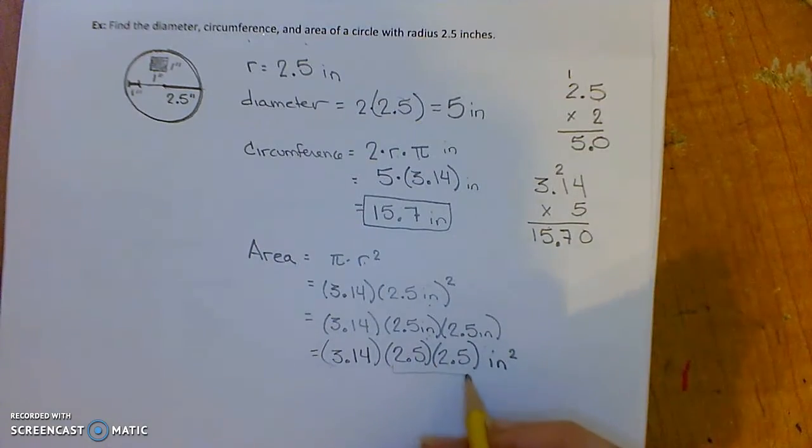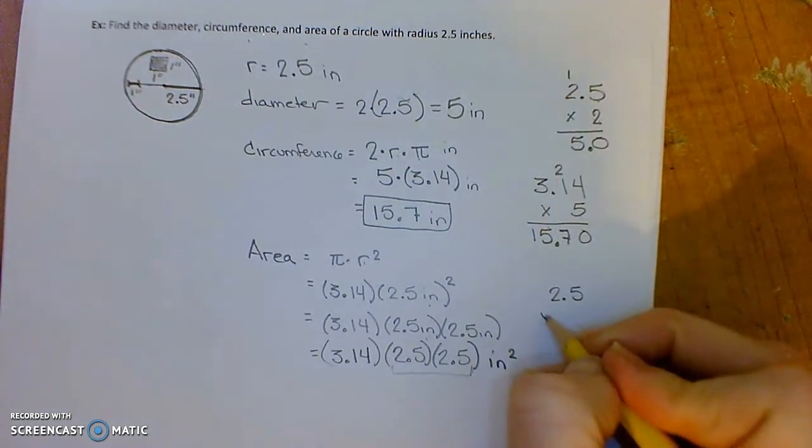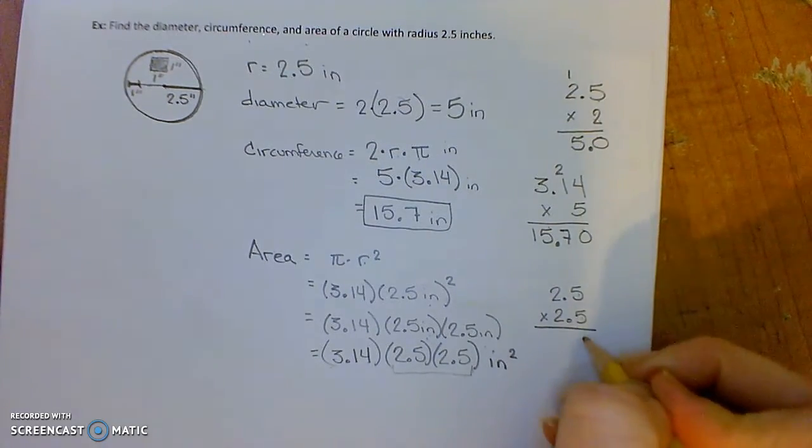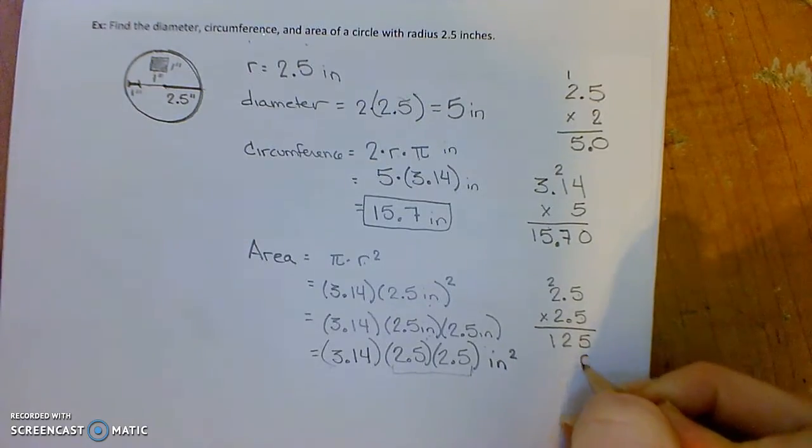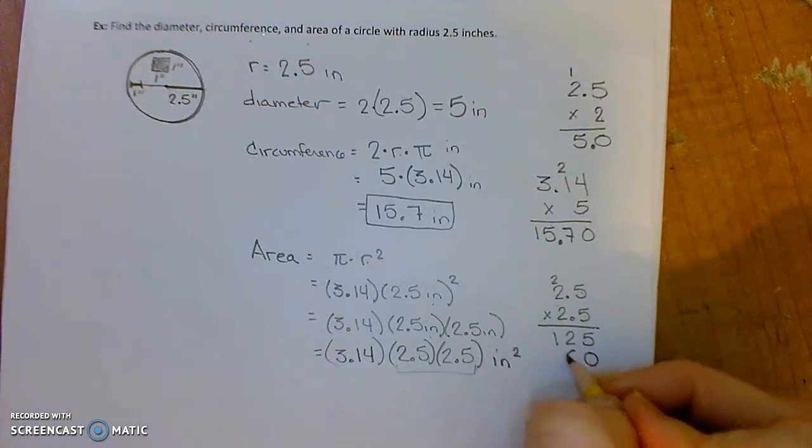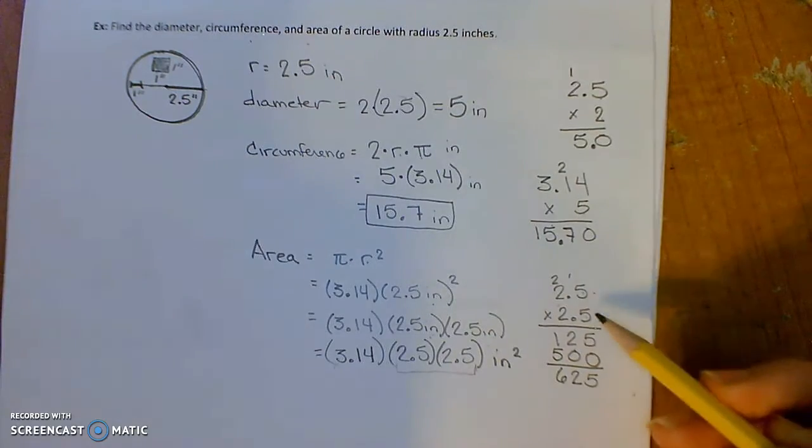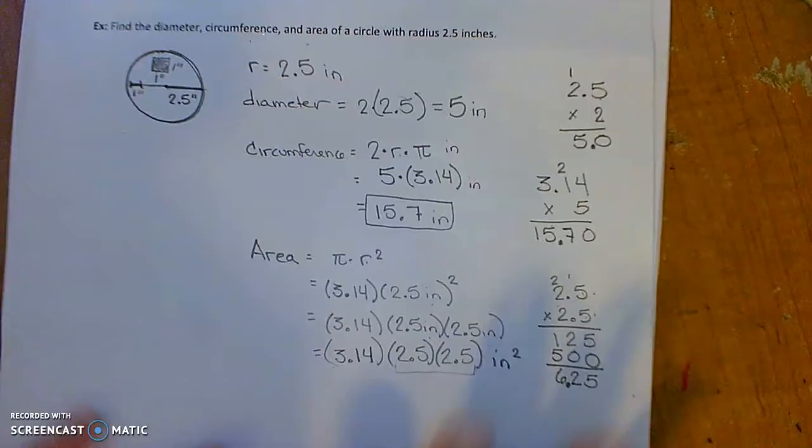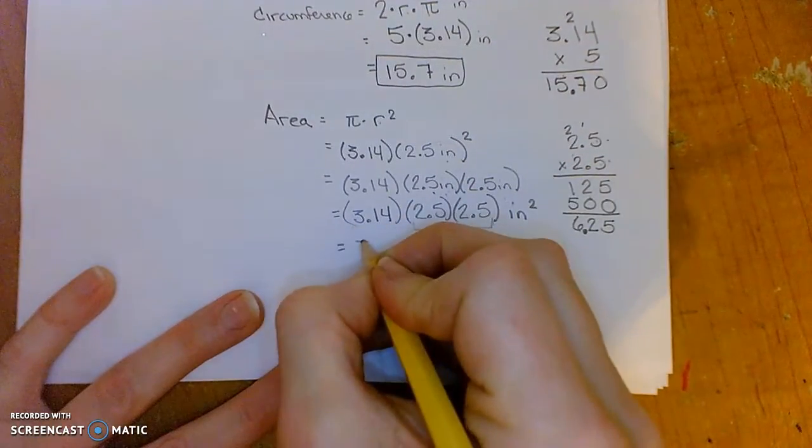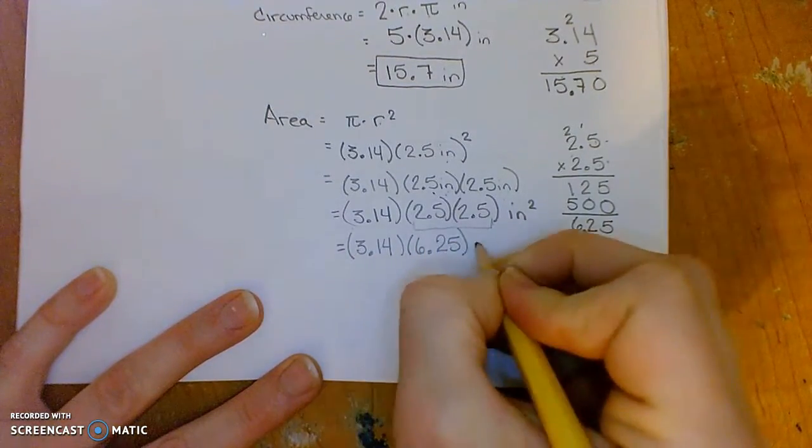First I'll do the square first, the 2.5 times itself. 2.5 times 2.5. 5 times 5 is 25. 5 times 2 is 10, plus 2 is 12. Now I'll move on to the 2, so I'll put in a 0 placeholder. 2 times 5 is 10. 2 times 2 is 4, plus 1 is 5. Adding, I get 625. Notice I have one place here, one place after the decimal here, so in total I'll have two places after the decimal.